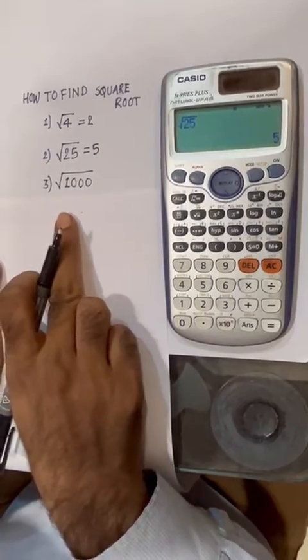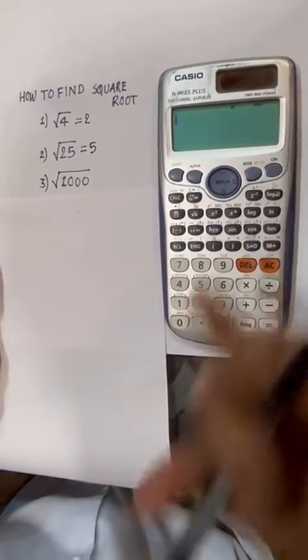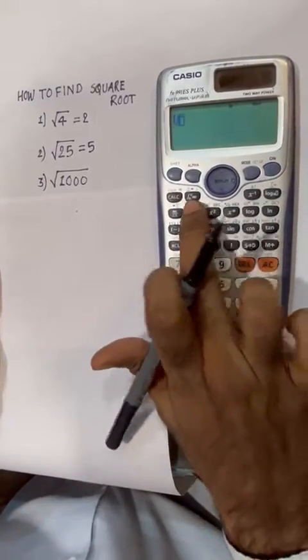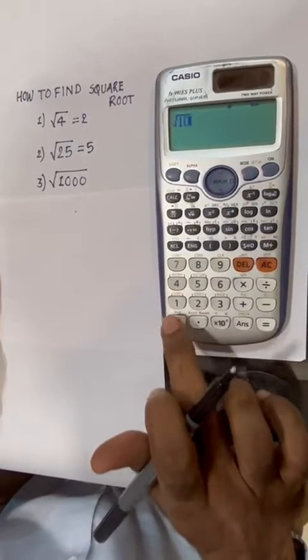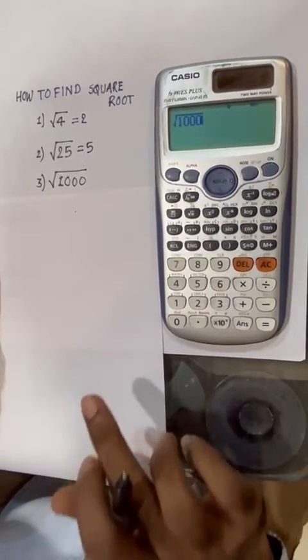Let's take 1000. We will find the square root of 1000. Press square root, then type 1, 0, 0, 0.